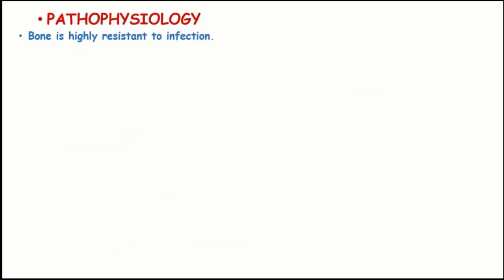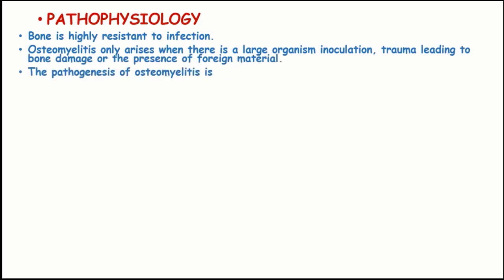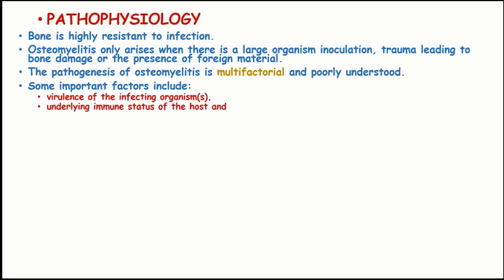Normally the bone is highly resistant to infection, and in osteomyelitis it only arises when there is a large organism inoculation, trauma leading to bone damage, or the presence of foreign materials. The pathogenesis of osteomyelitis is multifactorial and not fully understood. Some immunological factors include the virulence of the infecting organisms, underlying immune status of the host, genotype, location, and vascularity of the bone.